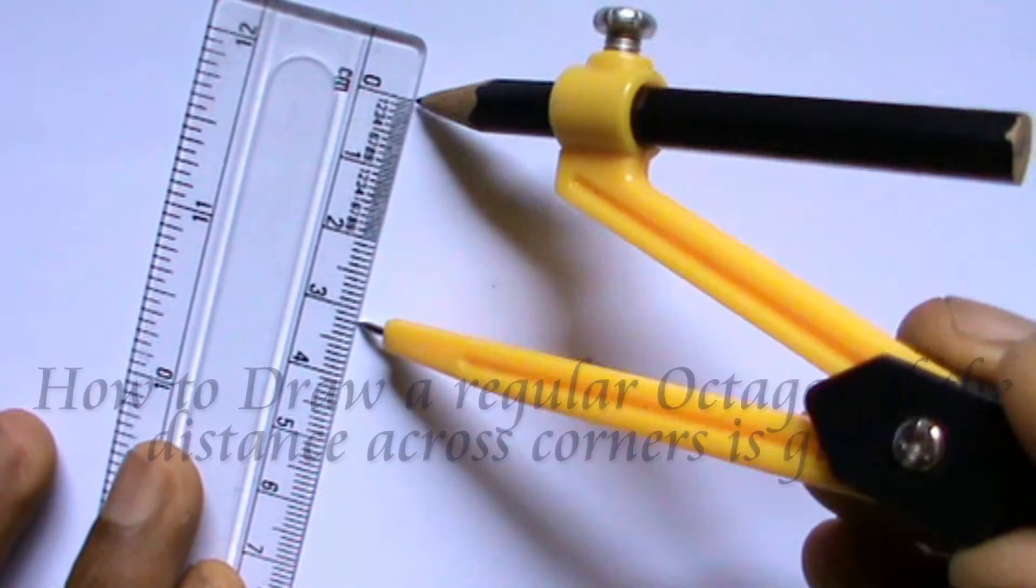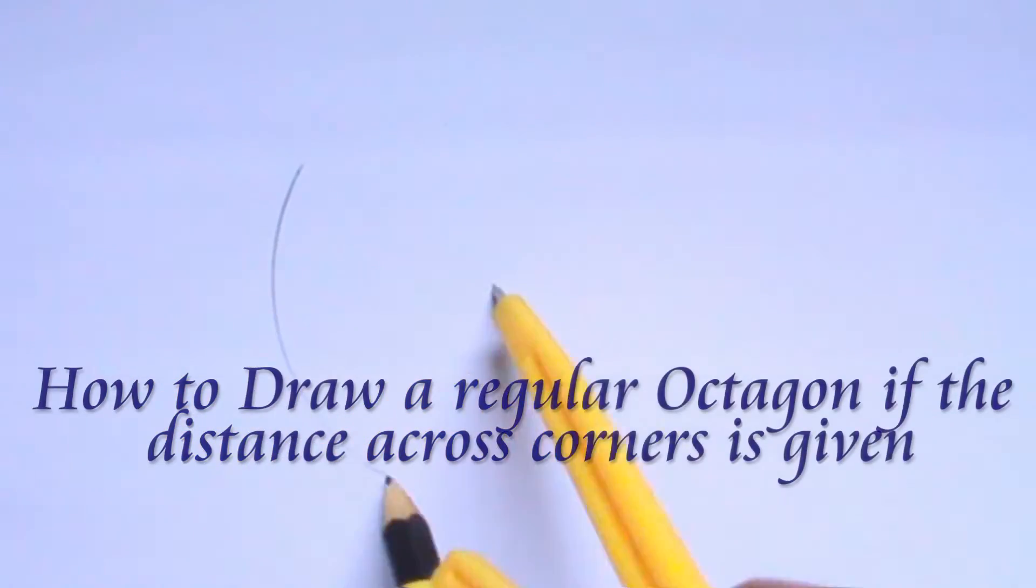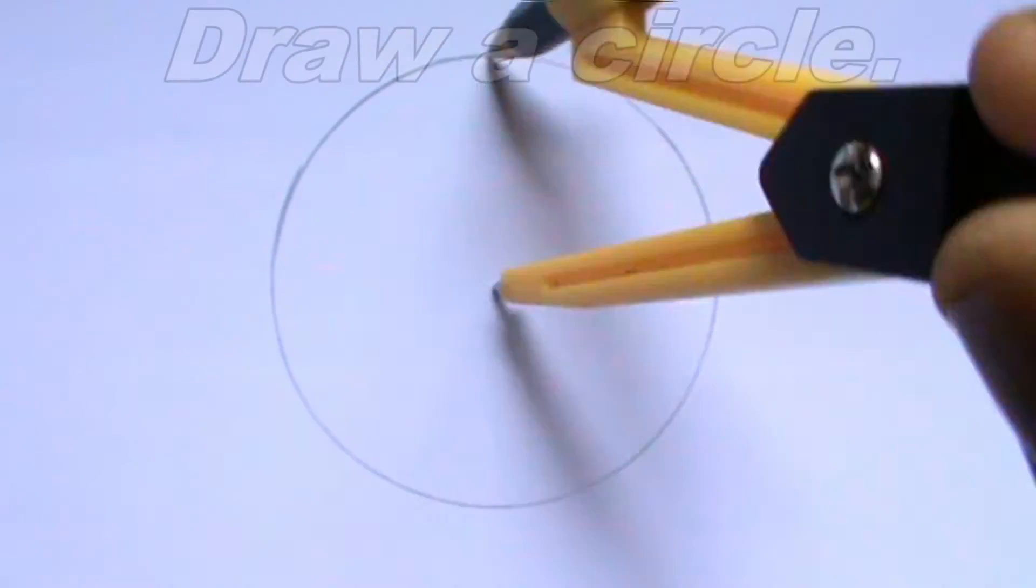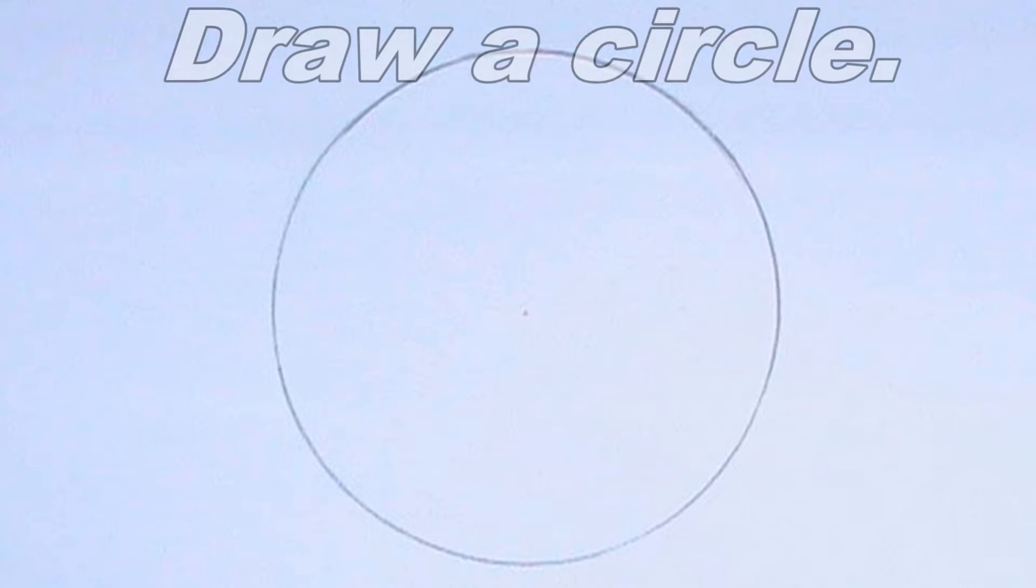Welcome to iTech Tutorial. In this video, I will be showing you how to draw a regular octagon if the distance across corners is specified.